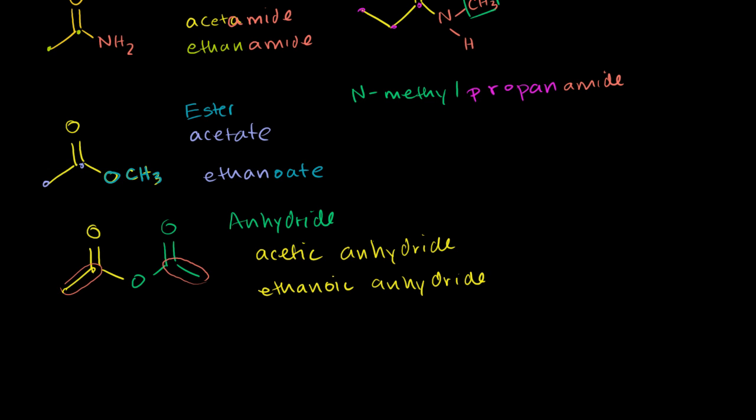And just to make things clear, if this molecule, instead of that, if we had something that looked like this, where the carbon chains on either end had three carbons, 1, 2, 3, we would call this propanoic anhydride.